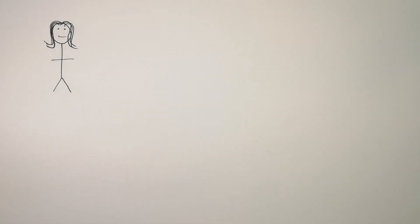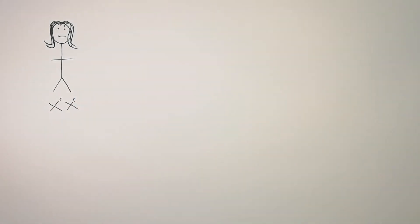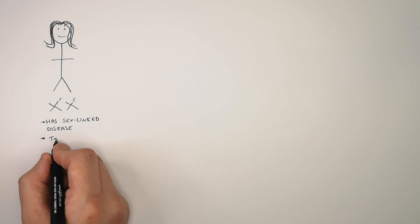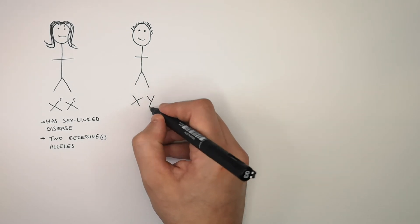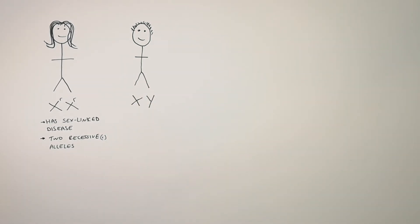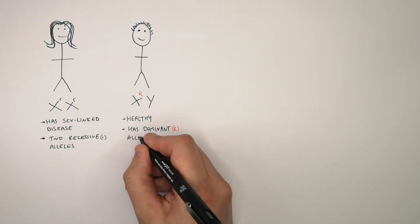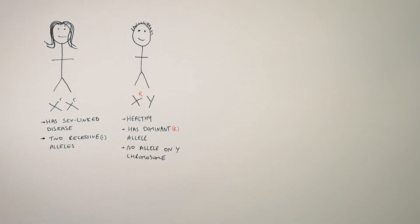Now let's look at the inheritance when the woman has XX chromosomes with the recessive allele on both X chromosomes, meaning she has the disease. The male has XY chromosomes — his X chromosome carries the dominant allele so he has no disease, and his Y chromosome has no allele because that section is missing.